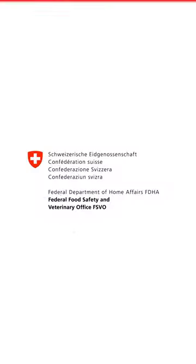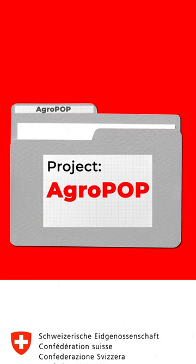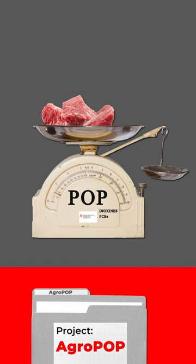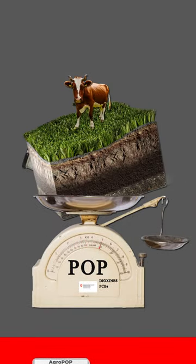This is why the FSVO and the FOAG have financed the Agro-POP project to measure the amounts of two POP substances, dioxins and PCBs, in beef, veal, dairy products, and in the soils of Swiss farms.